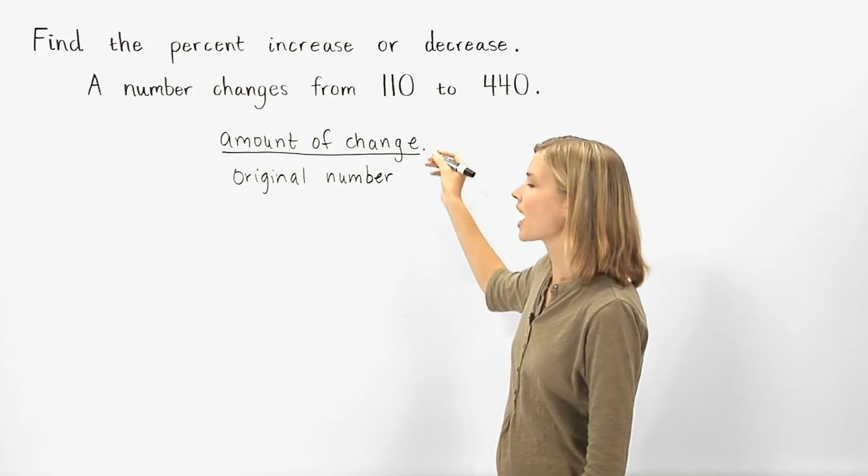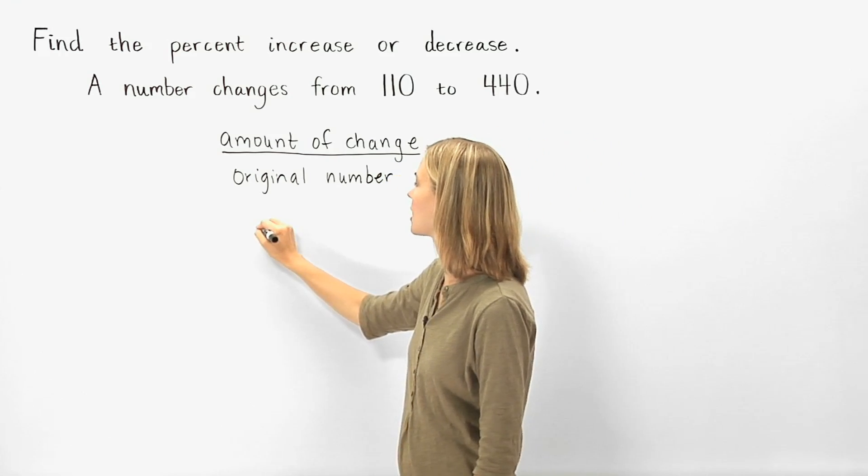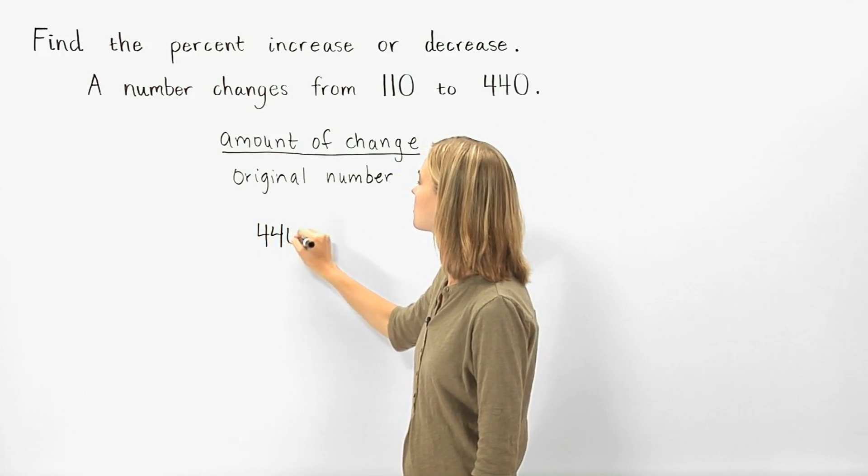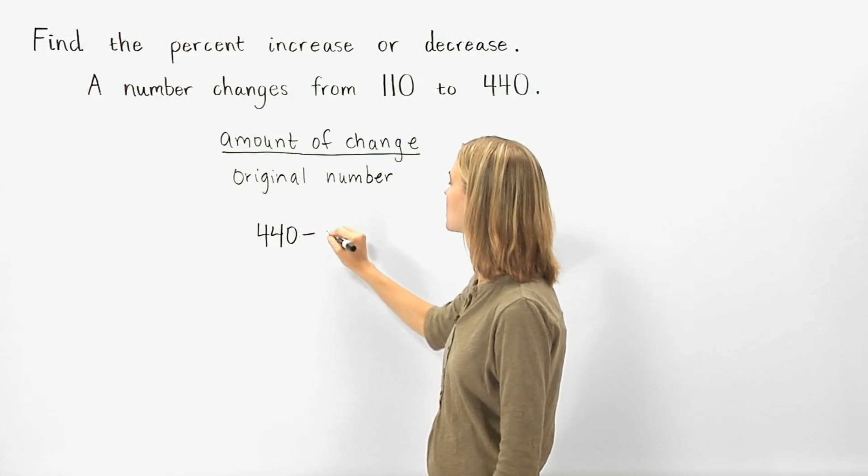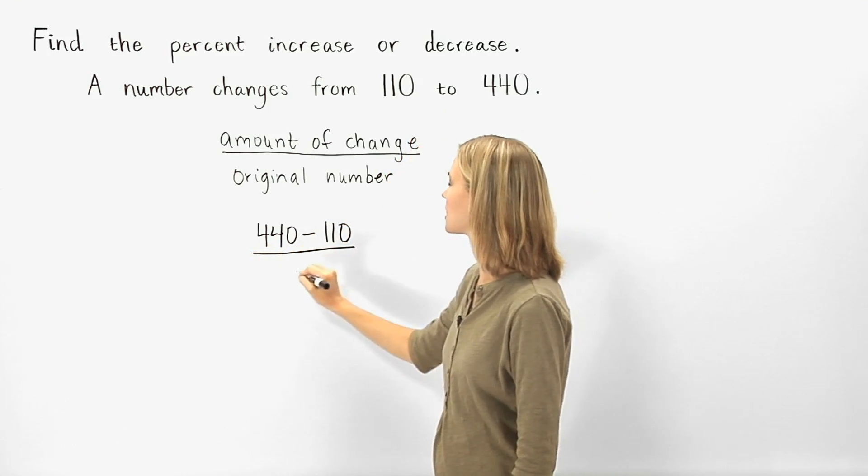The amount of change is the difference between the two numbers, which in this case is 440 minus 110, and the original number is 110.